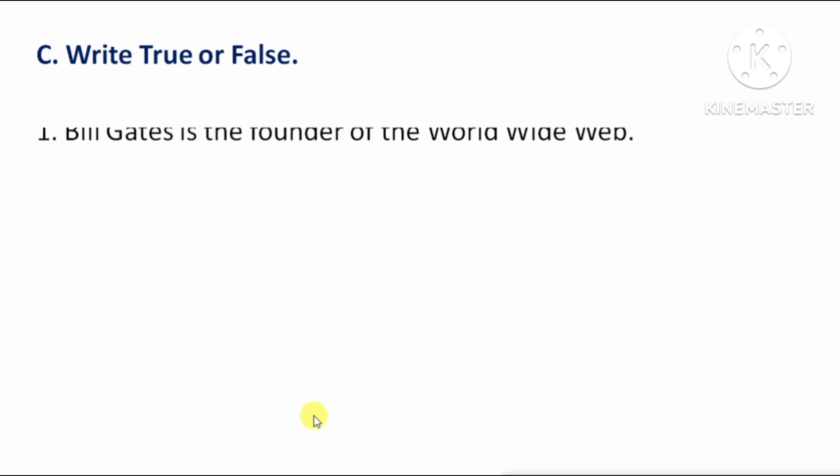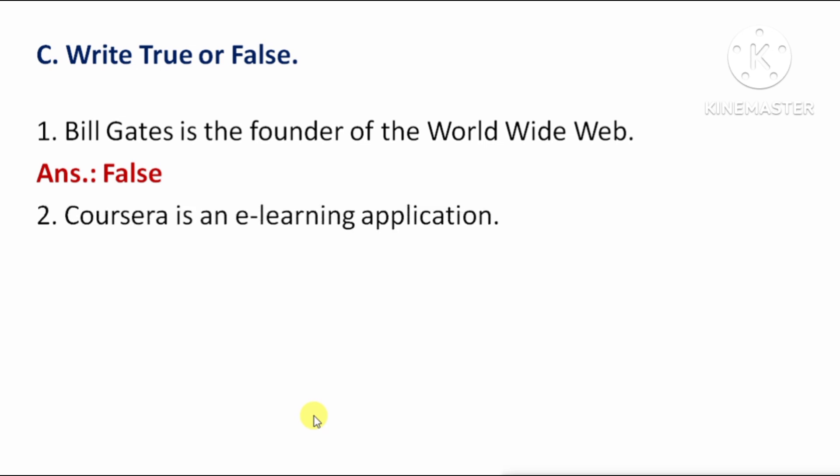True or false? First question: Bill Gates is the founder of the World Wide Web — means Bill Gates worldwide web ke founder hain. Yeh false hai, kyunki World Wide Web ke founder hain Tim Berners-Lee. Next question: Coursera is an e-learning application — means Coursera ek e-learning application hai. Yeh true hai.